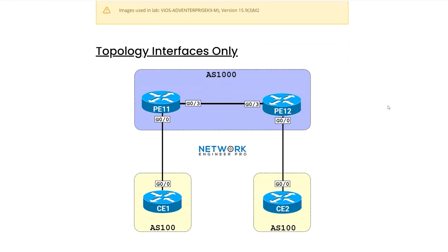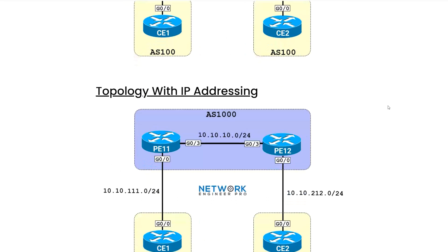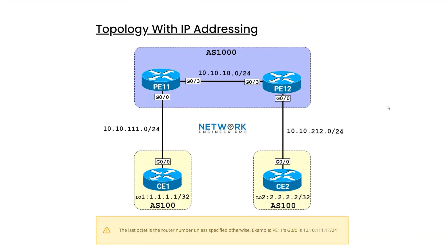In this lab, there are two topologies: one with interfaces only that's a little bit easier to read, and one with complete IP addressing. Loop prevention in eBGP is done by verifying the AS number in the AS path. If the router receives an update from its neighbor and it sees its own AS number in the AS path field, it's not going to accept the update. That can cause a problem in scenarios like this one where we have multiple customers connecting to the provider using the same AS number.